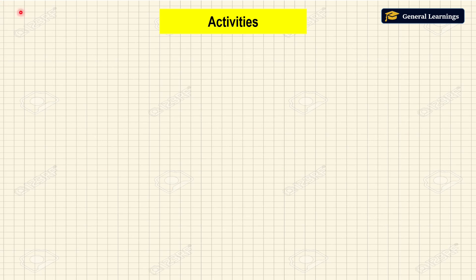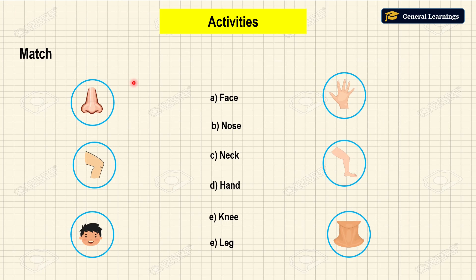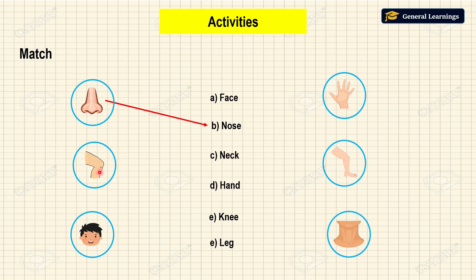Now we are going to see some activities. We are going to match these body parts to their respective names. What body part is it? Any guess? Yes, it is nose. Now we are going to mark the nose. Next, which body part is this? Any idea? Yes, it is knee. So we are going to mark the knee.